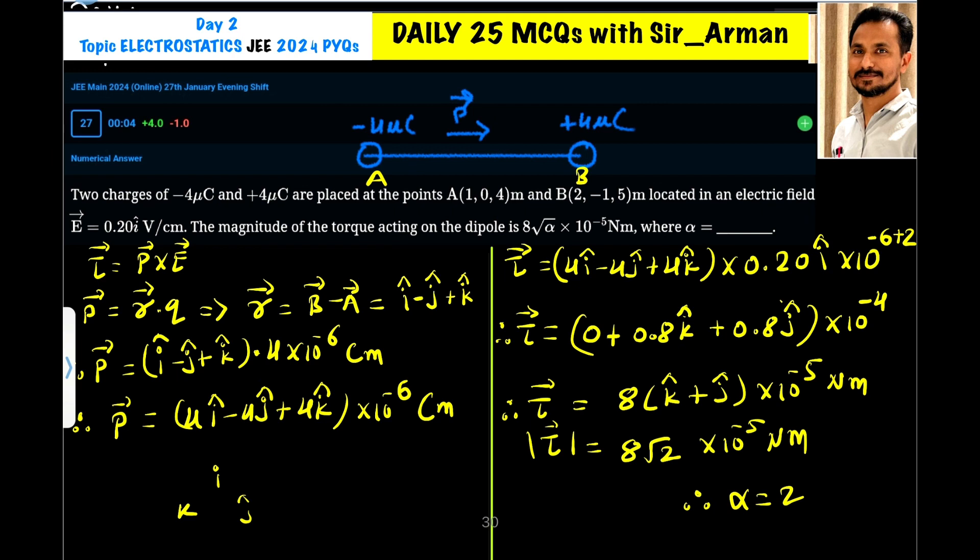Now the dipole moment is R into Q, so R I have written here, I cap minus J cap plus K cap, into Q. The value of Q is 4 micro coulomb. Here we will not consider the sign, we will only consider magnitude, so 4 into 10 raised to minus 6 coulomb meter. So I have just multiplied 4 inside, so it is 4I minus 4J plus 4K into 10 raised to minus 6 coulomb meter.